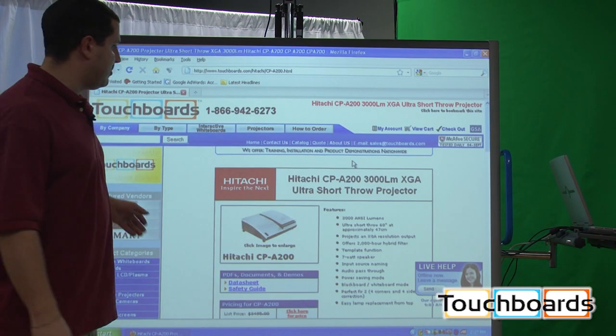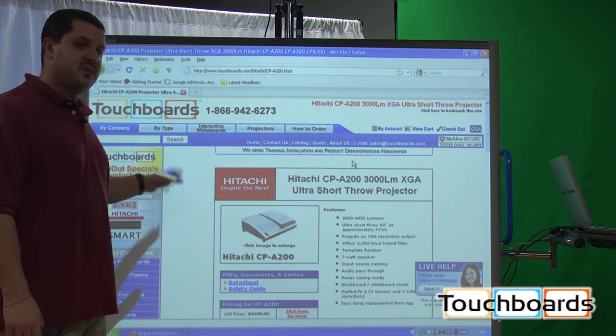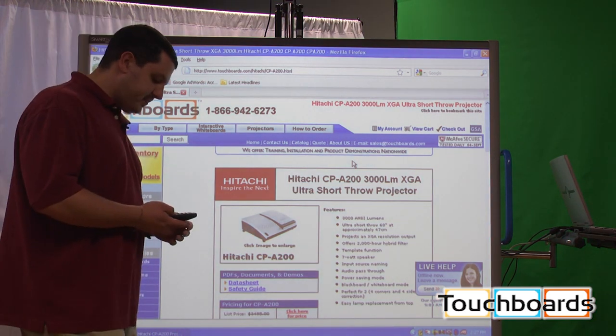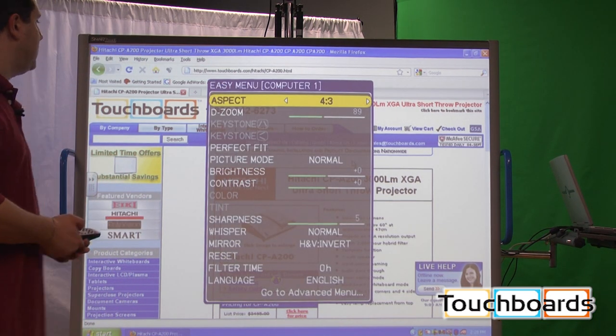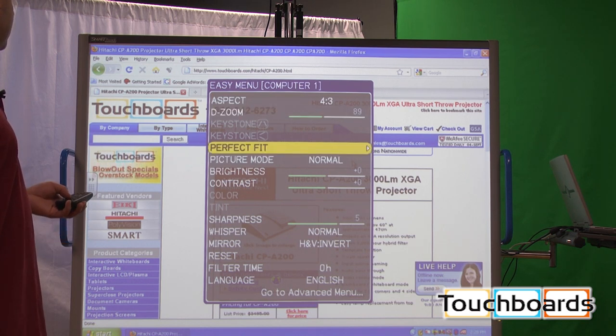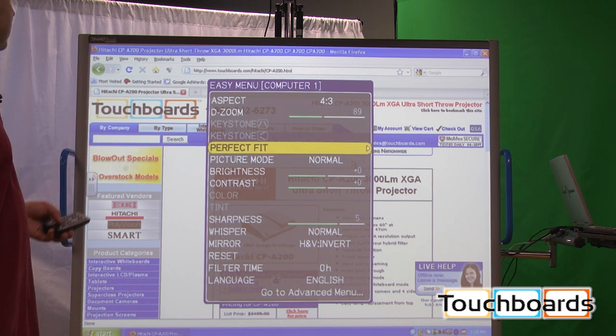The projector is filling the board quite nicely, but this projector has a lot of adjustment in it. It's all done through the menu, the menu button on the remote. You pull up the menu, you can change your aspect ratio, your zoom, keystone. In this case it's not letting us, but you can.